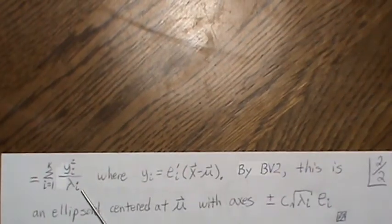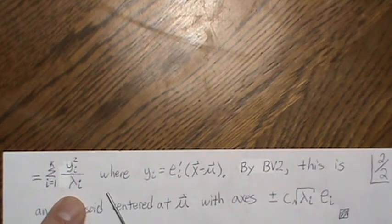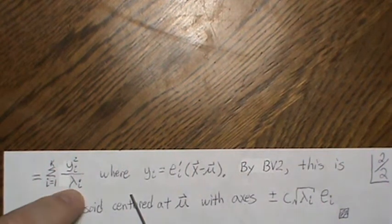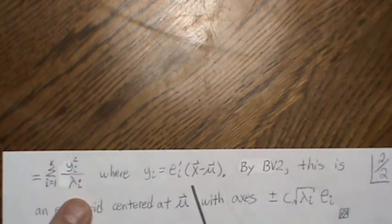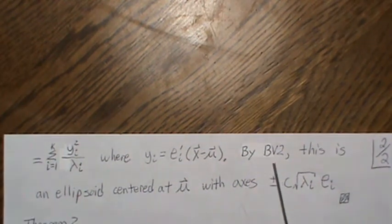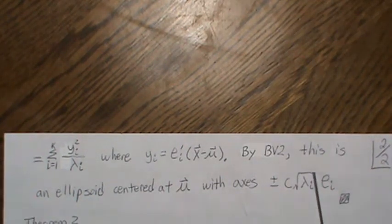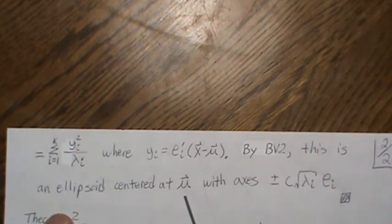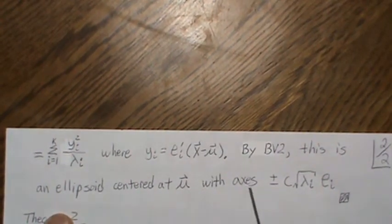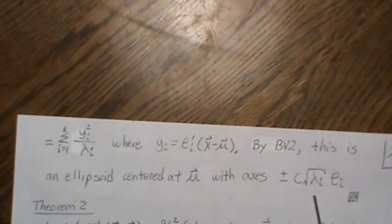This gives a sum that defines an ellipse, where y equals e_i' times (X minus mu). By background video two on principal components, this rotation of axes confirms the result is an ellipsoid centered at the mean with axes of the given lengths.